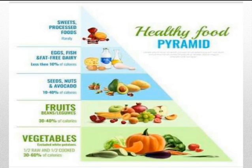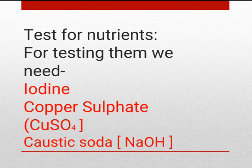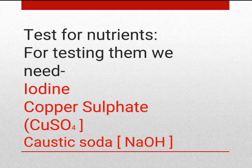This is a health pyramid showing what things are required in greater quantity and what things are needed very less in our body. Now coming to the first topic: the test for nutrients. For testing nutrients we need 3 things compulsorily — iodine, copper sulphate, and caustic soda.